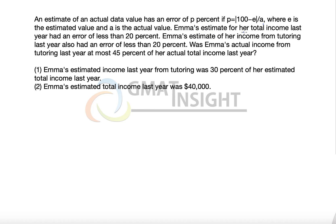Emma's estimate for her total income last year had an error of less than 20%, and Emma's estimated income from tutoring last year also had an error of less than 20%. We have two types of income: estimated income and actual income.